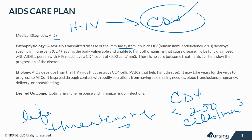There is no cure, but some treatments can help slow the progression of the disease. AIDS develops from the HIV virus that destroys CD4 cells, which are basically white blood cells that help fight disease. It may take several years for the virus to progress to AIDS, if it does at all. It is spread through contact with bodily secretions from having sex, sharing needles, blood transfusions, pregnancy, possibly delivery or breastfeeding.